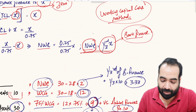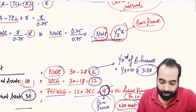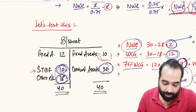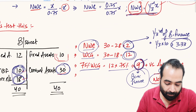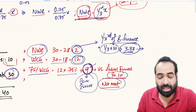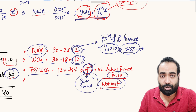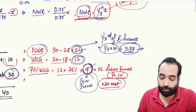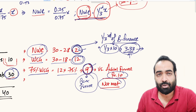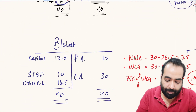Now let's test our derived formula. NWC should be one-third of bank finance. Bank finance is ₹10, so one-third of ₹10 = ₹3.33. Your NWC should be a minimum of ₹3.33, but actual NWC is ₹2. There is a shortfall in NWC as well. This confirms the theory — both methods give the same conclusion: the MPBF norms are not met in this example.